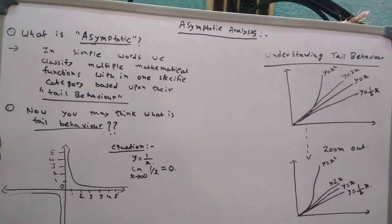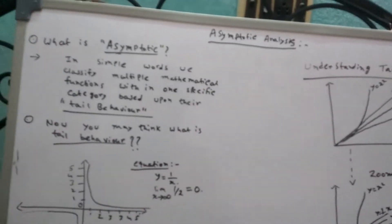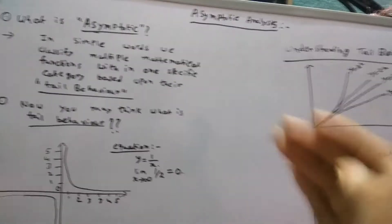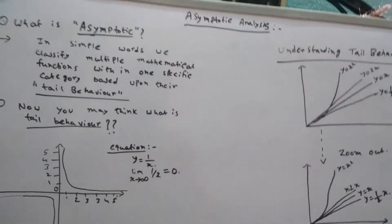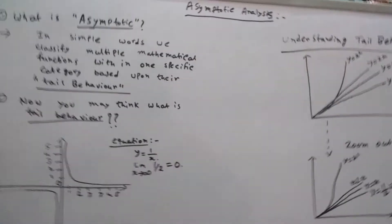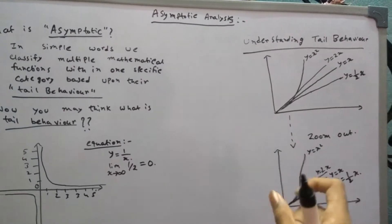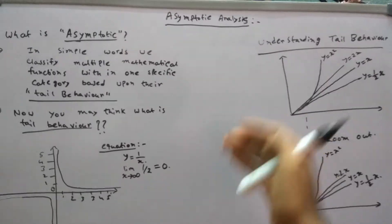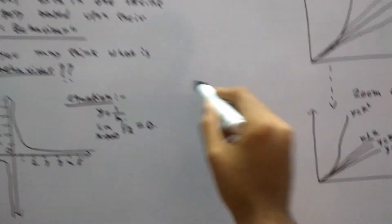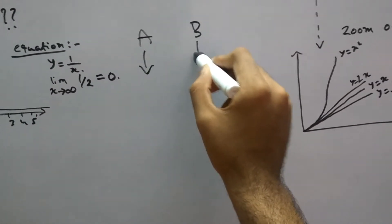Welcome back. Today's topic is asymptotic analysis. Before starting, let me tell you why we need to learn it. Imagine you are writing a code — you are developing an algorithm to solve a problem. Let's suppose person A solves the problem and person B also solves the problem.